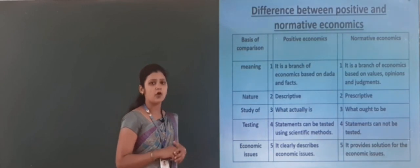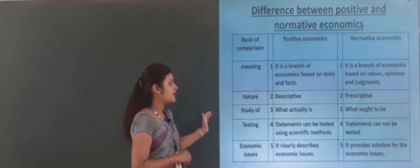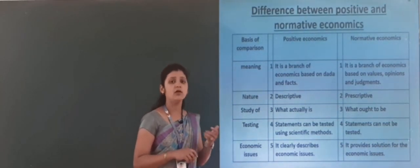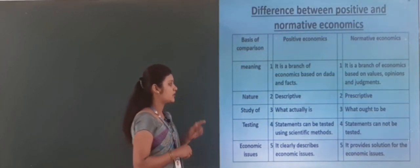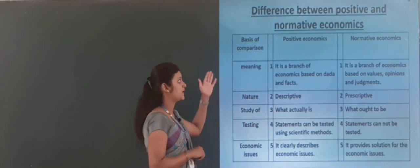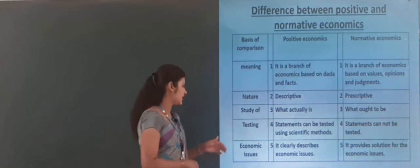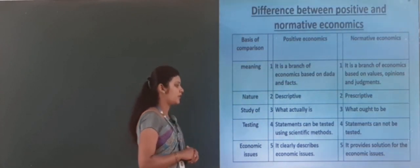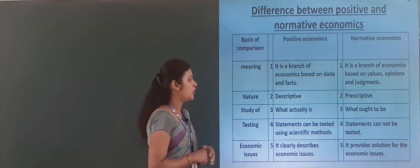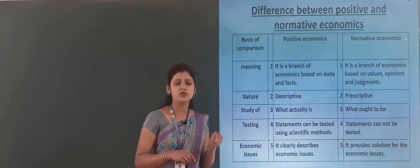Positive economics is descriptive in nature and normative economics is prescriptive in nature. Positive economics studies what actually is, while normative economics studies what ought to be. The statements under positive economics can be tested using scientific methods, whereas under normative economics, statements cannot be tested. Positive economics clearly describes economic issues or problems, while normative economics provides solutions to those economic problems.